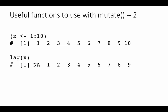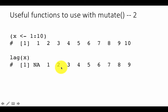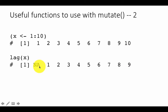This is typically useful when you are representing time series. Because it is lagged, in the second position you get what was in the first position of x, in the third position you get what was in the second position, and in the tenth position you get what was in the ninth position. The last element is lost, and for the first position there is nothing before the first element, so you get an NA.